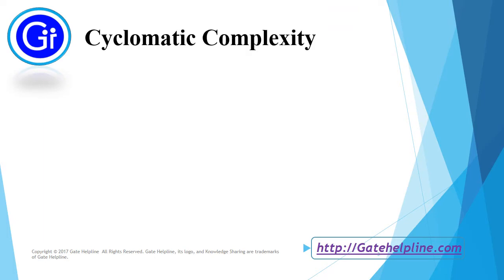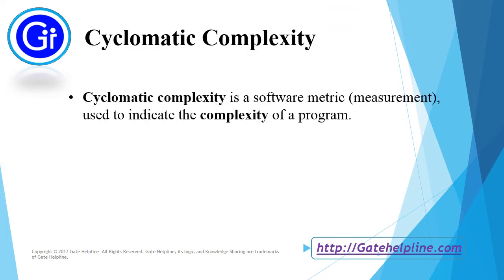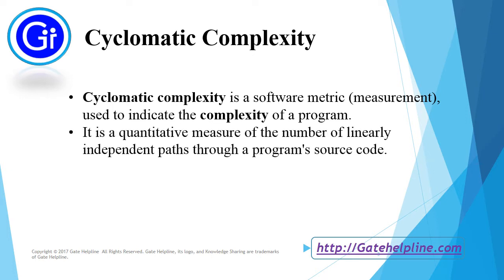So first we will see cyclomatic complexity. Cyclomatic complexity is a software metric used to indicate the complexity of a program. It is a quantitative measure of the number of linearly independent paths through a program source code.